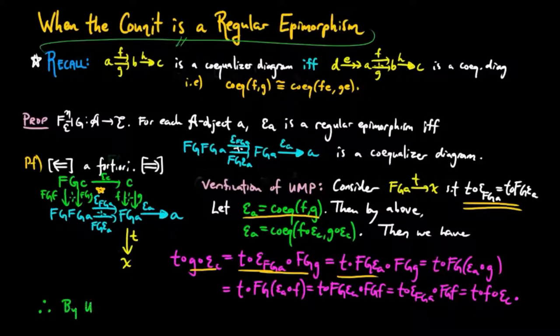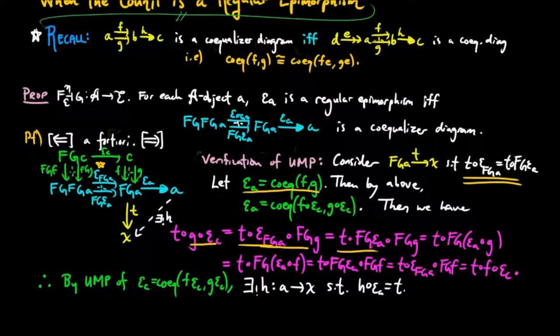Therefore, by the universal mapping property of epsilon C as a co-equalizer of F epsilon C and G epsilon C, there is a unique factorization H such that H epsilon A is equal to T.